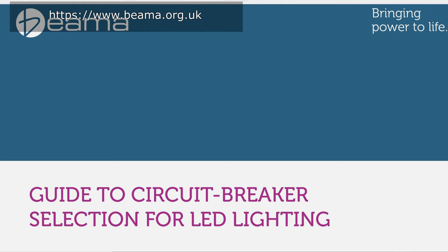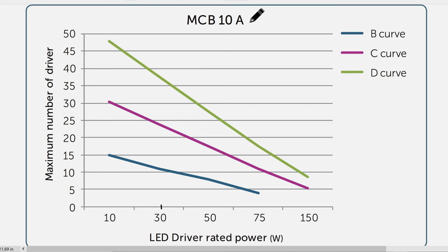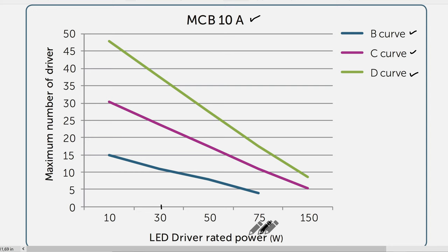I've located a guide to circuit breaker selection for LED lighting. In this guide they have a miniature circuit breaker of 10 amps, and three curves representing different types of circuit breakers. On the vertical axis we have the maximum number of drivers — the electronic driver circuit found inside the floodlight. On the horizontal axis we have the LED driver rating in watts. At 30 watts crossing the B curve, the maximum number of floodlights for a 10-amp miniature circuit breaker is only 11.